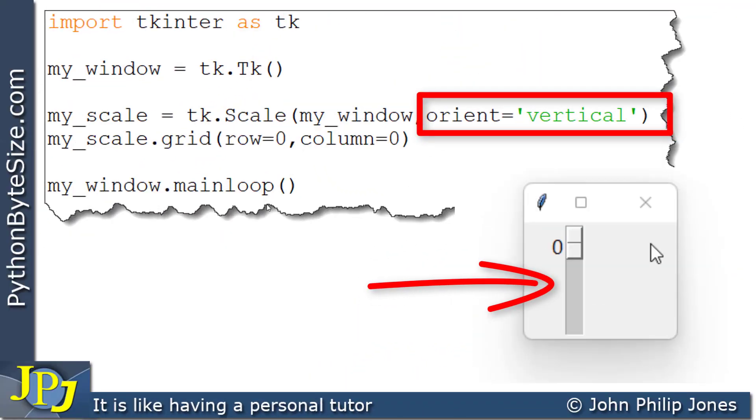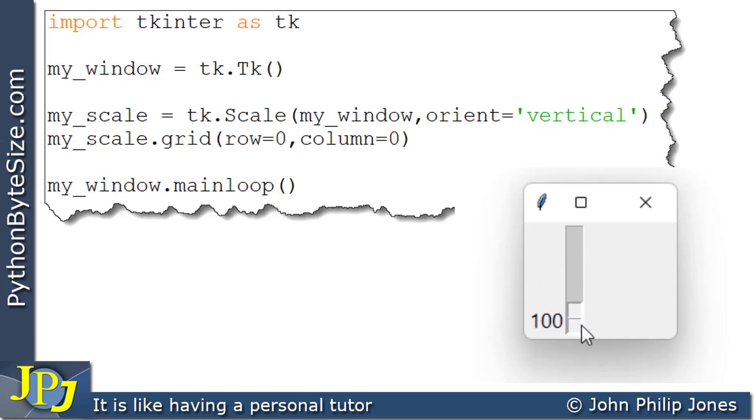With the vertical scale, I can grab hold of the slider, and I can move it down to 100. I can move it up to 0, and I can leave it at any position on the scale.